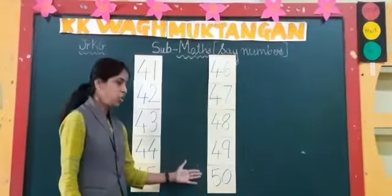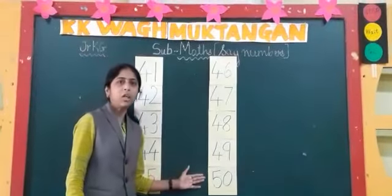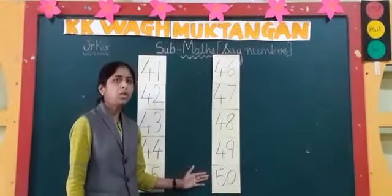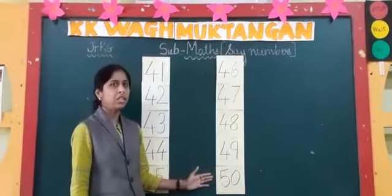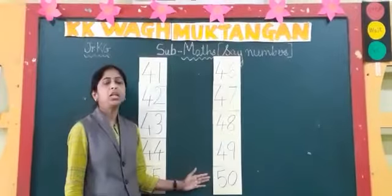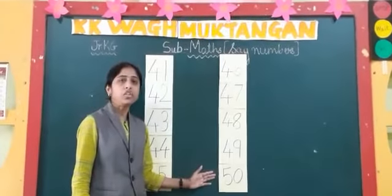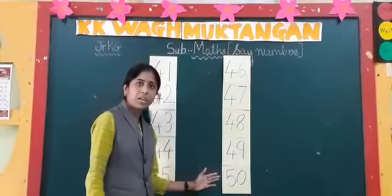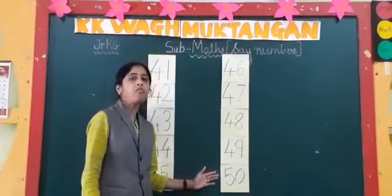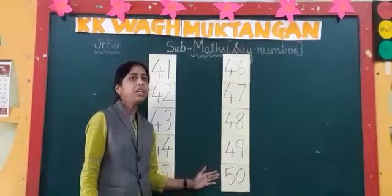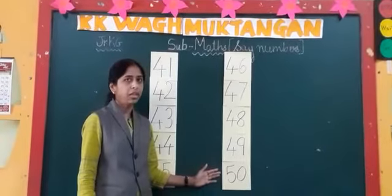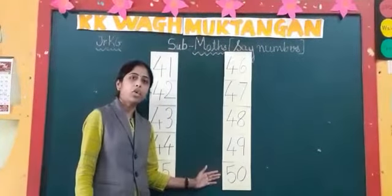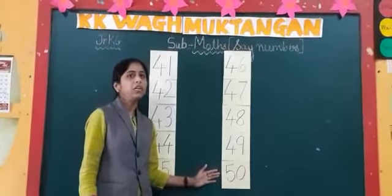Now children, tell me, how are you going to say this number? Are you going to say it as 50? No. We have to say this number as 40 and 10 — 50. So you are going to say this number as 40 and 10, 50.